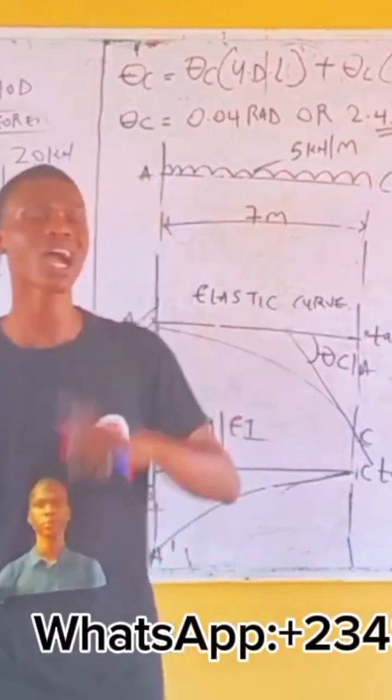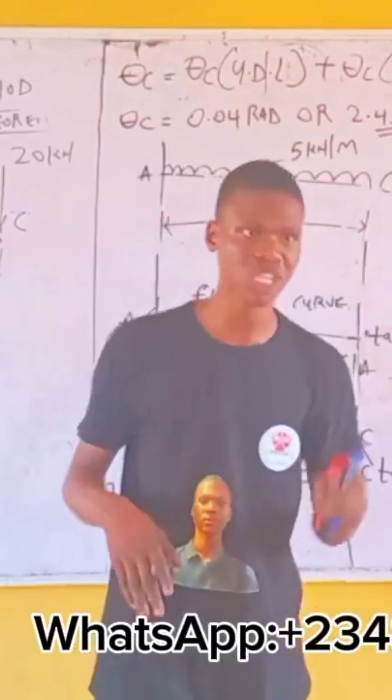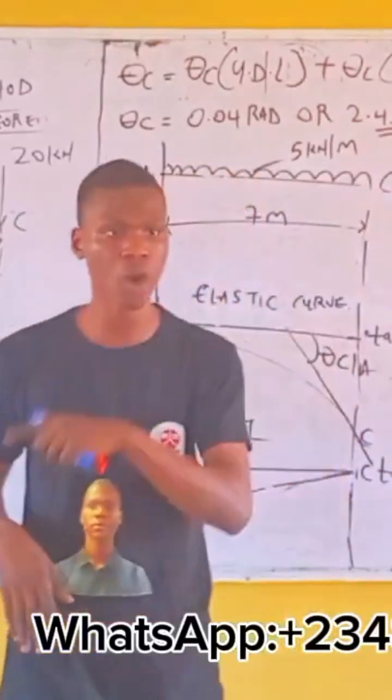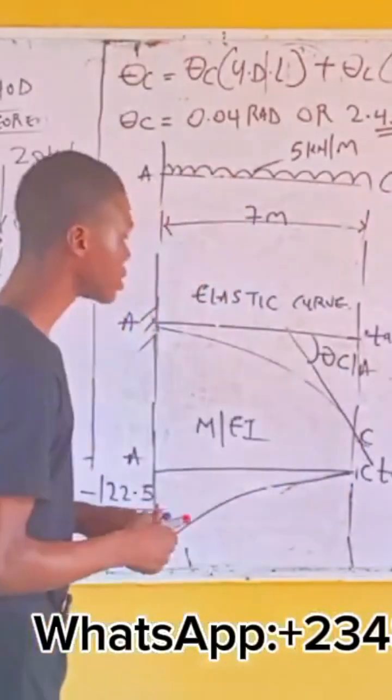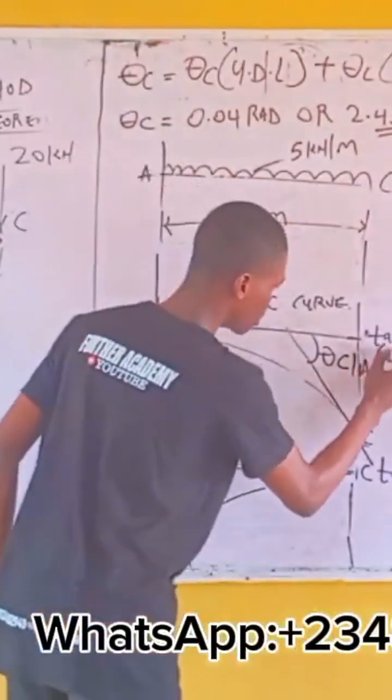But in this case, we are taking your centroid 2 with respect to what point? Is it point A or point C? Point C. I'm taking my centroid towards the point C. Because this is the vertical deviation that you are seeing.